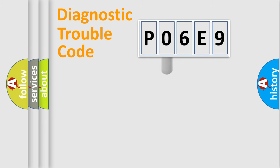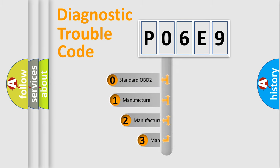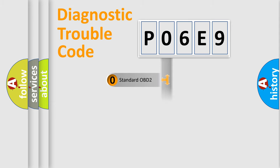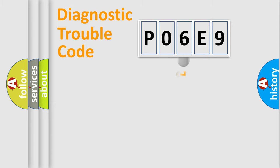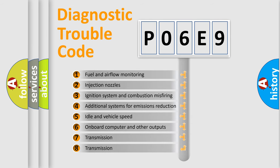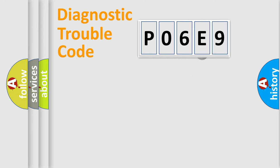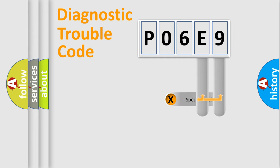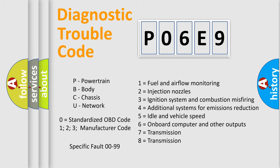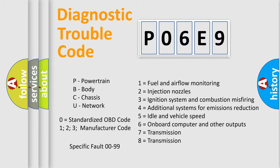This distribution is defined in the first character of the code. If the second character is expressed as zero, it is a standardized error. In the case of numbers 1, 2, or 3, it is a more specific expression of a car-specific error. The third character specifies a subset of errors. The distribution shown is valid only for the standardized DTC code, and only the last two characters define the specific fault of the group. This division is valid only if the second character is expressed by the number zero.